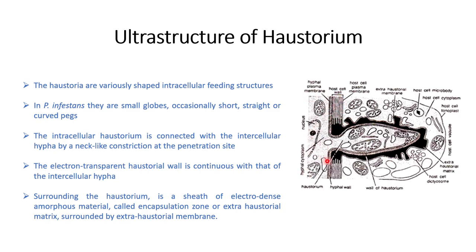You can see the host cell wall, the fungal cell wall, the host cytoplasm with embedded organelles, and the fungal cytoplasm. Formation of the haustorium starts as a small bulge at a certain site in the intracellular hyphae. After that, the haustorium becomes elongated and slightly globular. This structure is then separated from the rest of the cytoplasm by the extrahaustorial membrane.